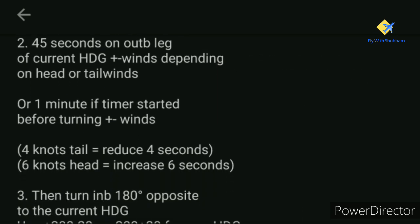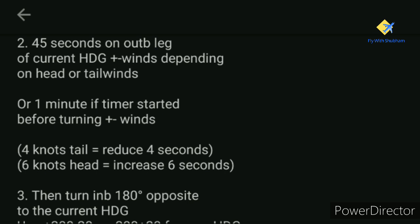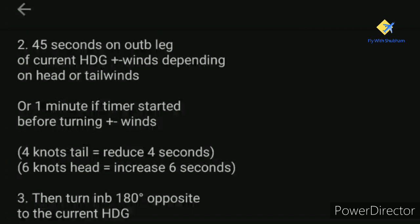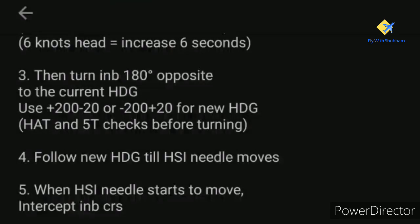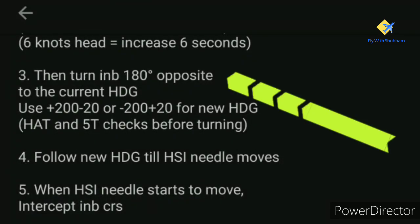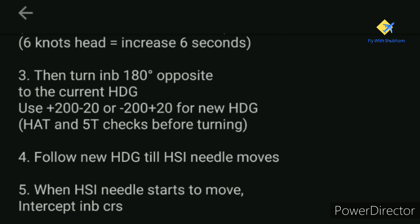The second step is to maintain 45 seconds on the new heading of 290 — adjusted for winds — or 1 minute if the timer is started before the turn, also adjusted for winds. If you have a 4-knot tailwind on heading 290, subtract 4 seconds from the timer; if you have a 6-knot headwind, add 6 seconds. On heading 290 you also need to prepare to turn 180 degrees inbound, and conduct the HAT and 5T checks again before turning.